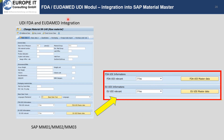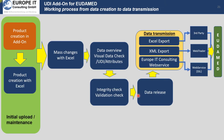The first step is in the material master. In the existing SAP transaction MM01 or MM02 you have the possibility to assign your material master as Eudamed relevant. This is the very first step before you can maintain data — you must assign your material as Eudamed relevant.